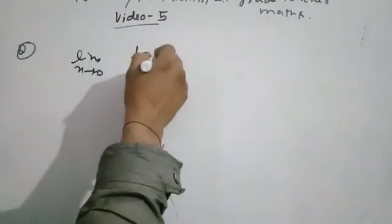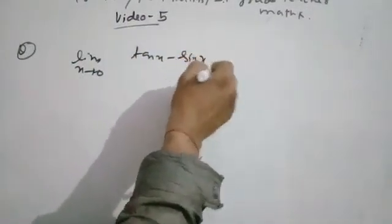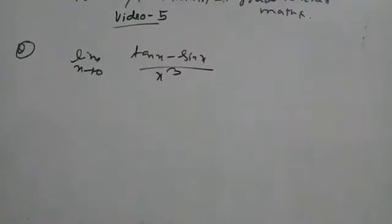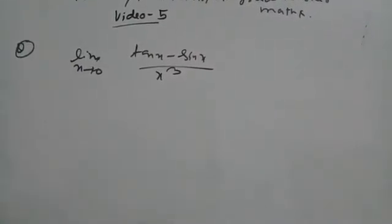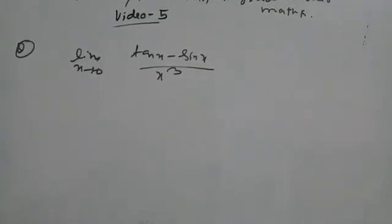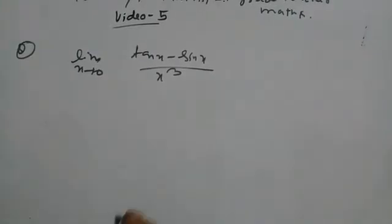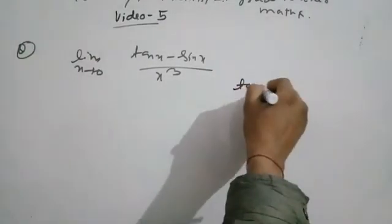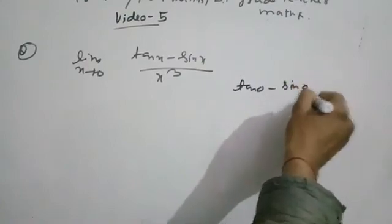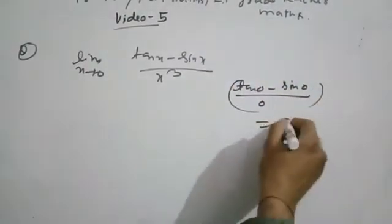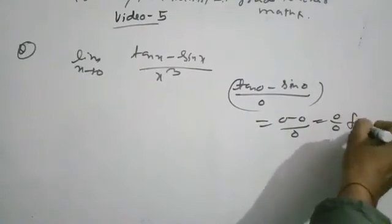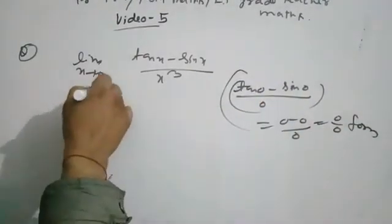Question: limit x tends to 0 of (tan x − sin x) / x³. Substituting x = 0 gives 0/0 form — tan(0) = 0, sin(0) = 0, and x³ = 0 — so we apply L'Hôpital's rule.